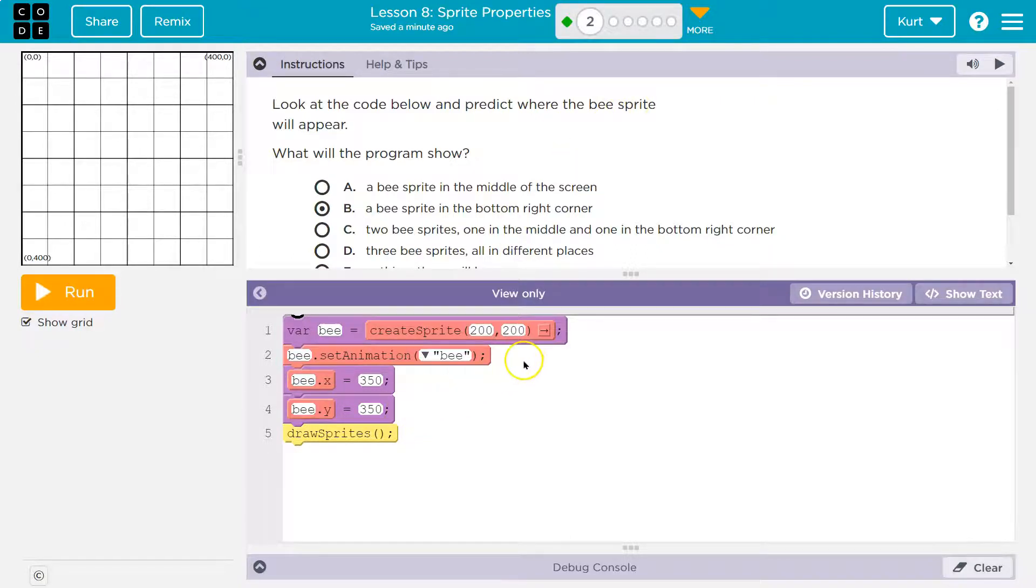Now look what we do. So that when we make the B, where does it appear? 200 200. So let me hover my mouse over and you can see, right? It's about right here. 200 200 is where we make this sprite appear at.